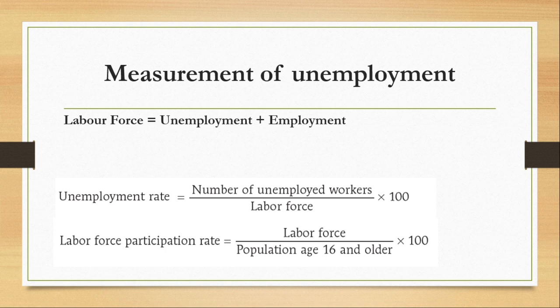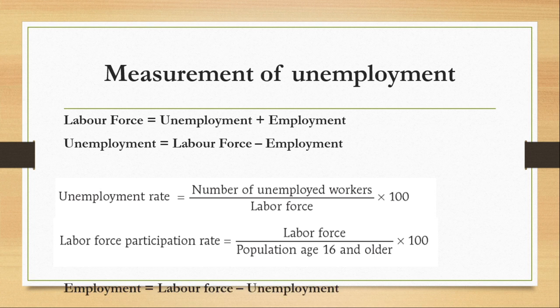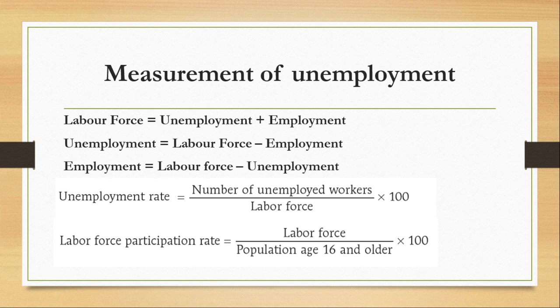Now let's look at the measurement of unemployment. Labor force equals employment plus unemployment. Unemployment equals labor force minus employment. Employment equals labor force minus unemployment. So if you want to calculate the labor force, you add unemployment plus employment. The unemployment rate is the number of unemployed workers divided by the labor force, multiplied by 100. The labor force participation rate is the labor force divided by the population age 16 and older, times 100.